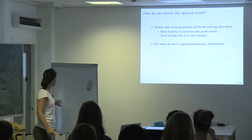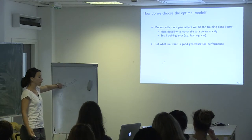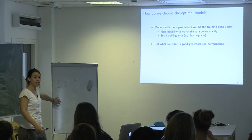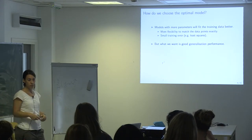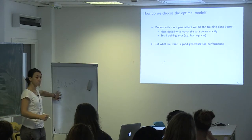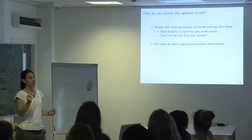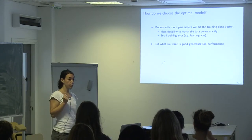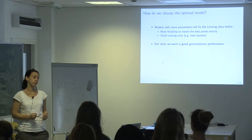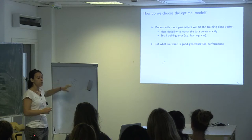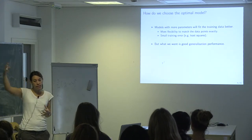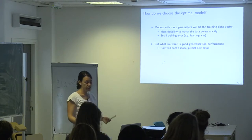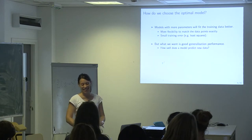What we really want is to predict new data points. For the training data we already know what y is — we've measured them — so we don't need to predict those. We want to predict individual n plus 1, n plus 2, and so on. The error we get for these new individuals is called the generalization error: the error on new individuals that have not been used in training. What we really want to maximize is this generalization performance.